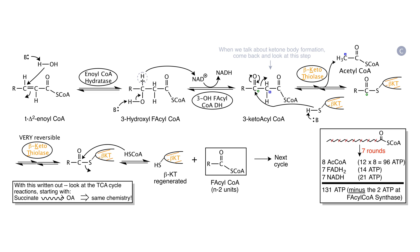The 3-keto acyl coenzyme A is now set up to release a first molecule of acetyl coenzyme A. The enzyme beta-ketothiolase has a cysteine on it; the thiol of the cysteine attacks the carbon bearing the keto group and releases acetyl coenzyme A. The residue — the remaining 14 carbons of the palmitate — is connected as a thioester to beta-ketothiolase. Beta-ketothiolase then transfers this 14-carbon residue to a coenzyme A molecule, forming a fatty acyl coenzyme A that is 14 carbons long — two carbons shorter than the 16-carbon palmitate we started with. This process, called beta-oxidation, continues from 14 to 12 to 10 carbons and so on, until the entire 16-carbon hydrocarbon has been processed through seven rounds of beta-oxidation to yield eight molecules of acetyl coenzyme A.